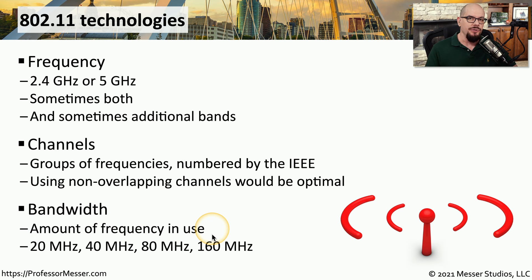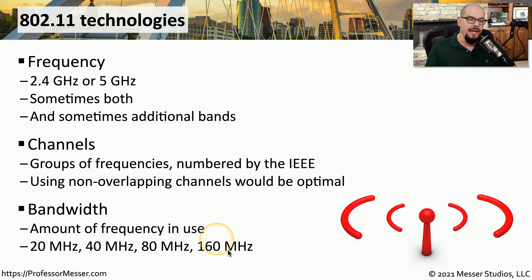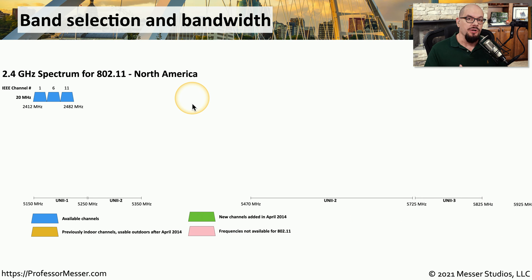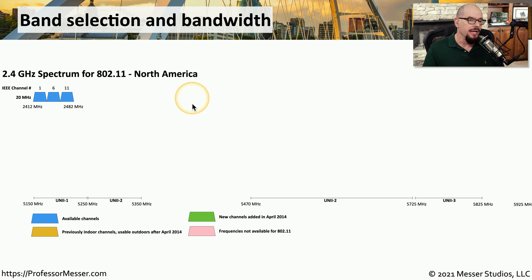On 802.11 networks, you often see 20 megahertz, 40 megahertz, 80 megahertz, and 160 megahertz bandwidths. Here's what we mean when we talk about the bandwidths and the number of frequencies available in the 2.4 gigahertz range and 5 gigahertz range.